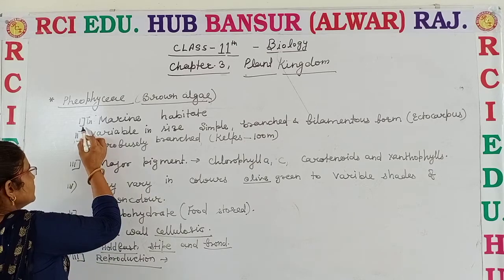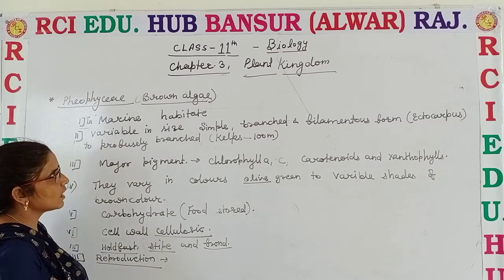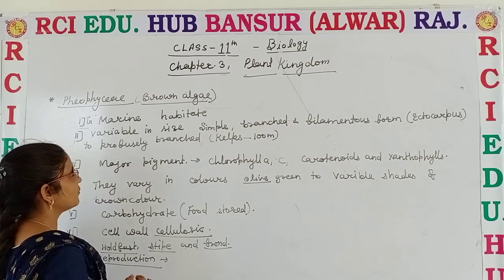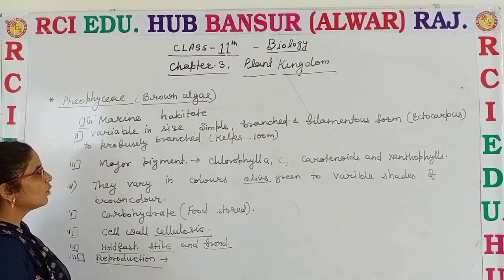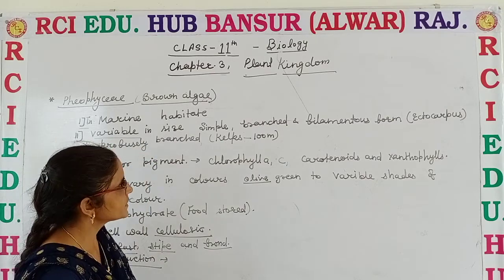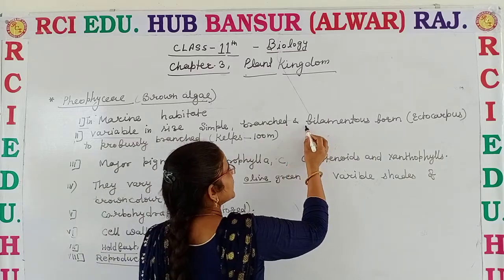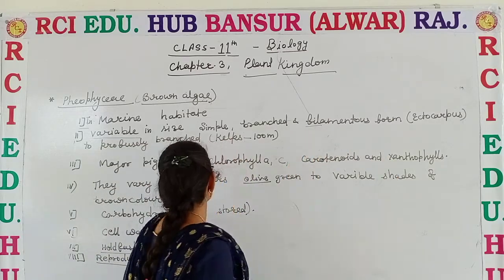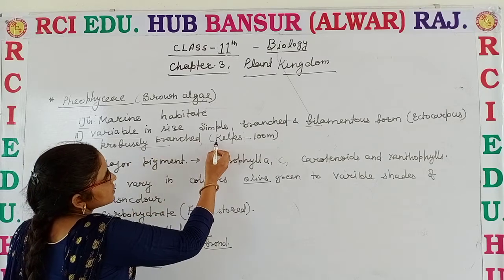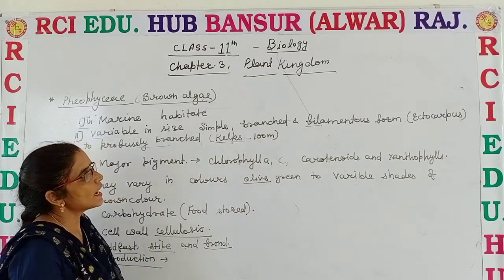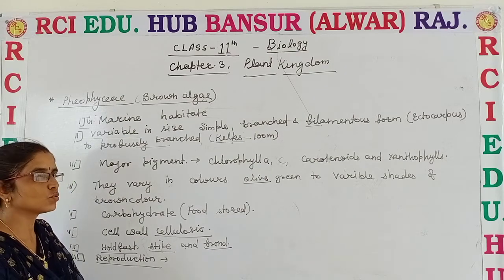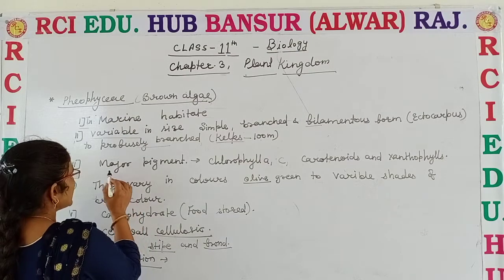First, all the members of the Phaeophyceae are mostly marine inhabited, which means they are found in salty water. They are variable in size — they range from simple branched and filamentous forms like Ectocarpus to profusely branched forms which are about 100 meters high, such as Kelp. So they are variable in size from Ectocarpus to Kelp.